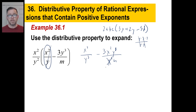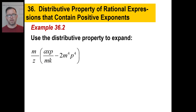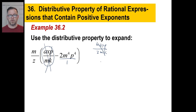This next one is no different. The only thing different is it has no denominator — so stick a one in there. Let's do the first fraction: M times AXP gives us MAXP in the numerator. Z times MK gives us ZMK in the denominator. Now we can reduce — the M's cancel. So that simplifies to AXP over ZK.